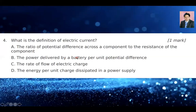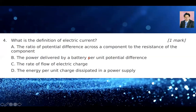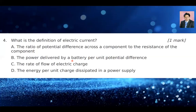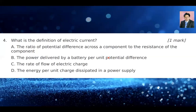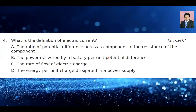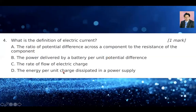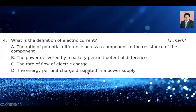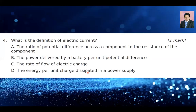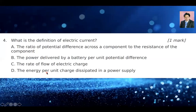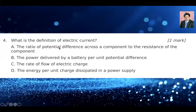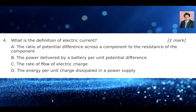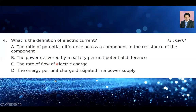Option D is the energy per unit charge dissipated in a power supply. Since E = VQ, then E divided by Q is V — so option D is completely incorrect. Options A and B, while mathematically correct, are not the definition of electric current. As far as the definition of electric current is concerned, you go with the rate of flow of electric charge. So the answer for question number four is C.